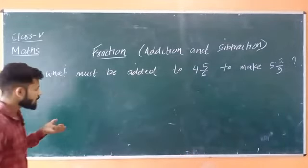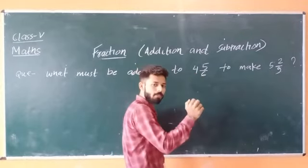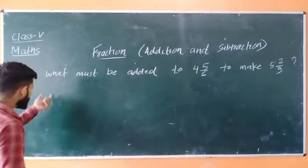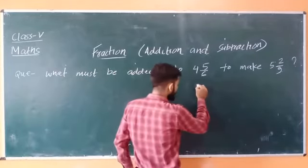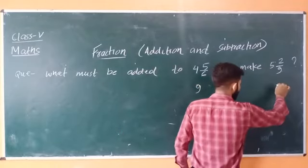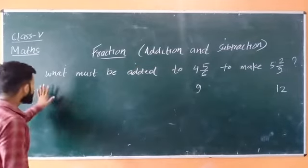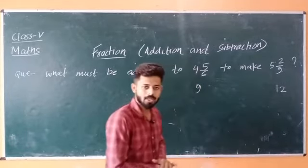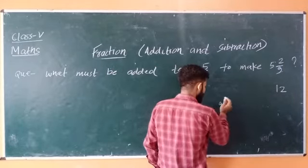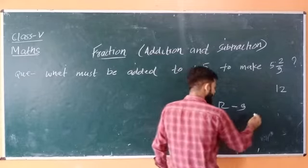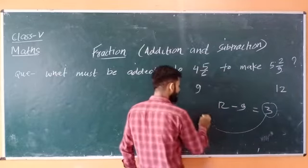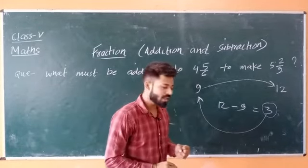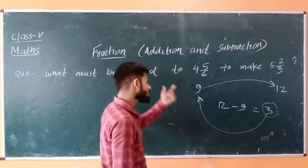The question asks: what do we add to 4 whole 5 upon 6 to get 5 whole 2 upon 9? To understand this, let's take a simpler example: what must be added to 9 to make 12? You would simply subtract 9 from 12 and get 3. So 3 is the number you add to 9 to make 12. The procedure is subtraction — subtract the smaller number from the larger number. The same concept applies here.